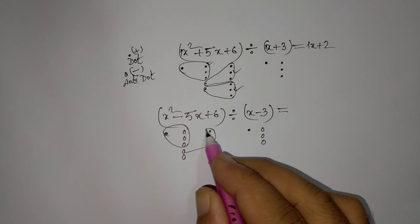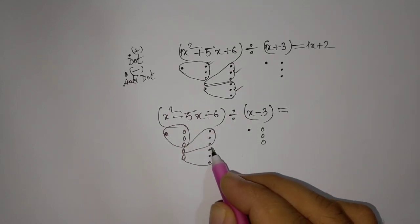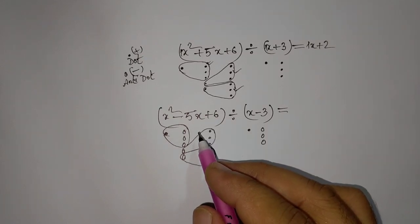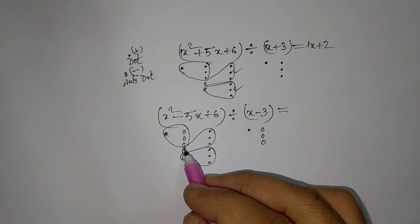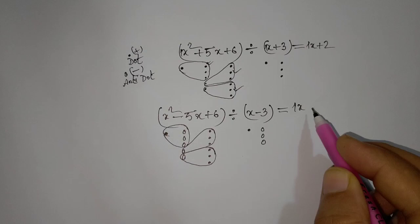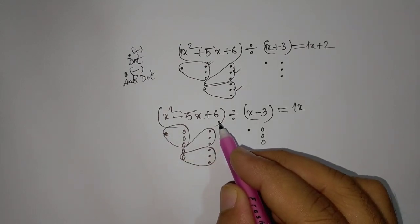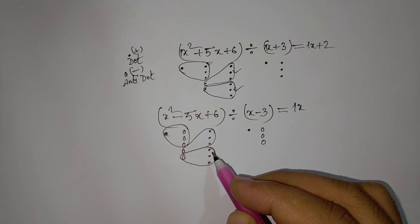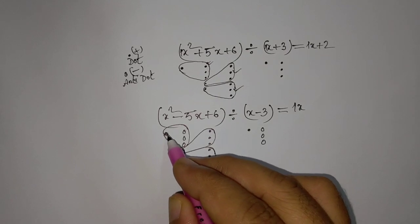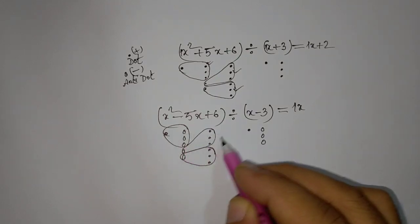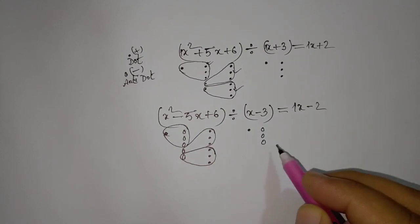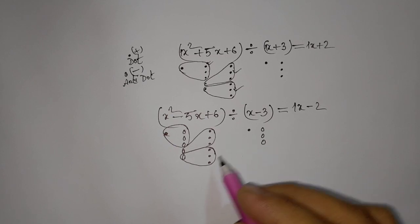Similar approach. For the x column, we take active bubble pairs. That gives x coefficient 1. For the constant column, we take anti-dot pairs — two. In the dot and anti-dot method, when there is a change of sign, we check: negative sign means the balance changes. We leave it like this. Right — another example.